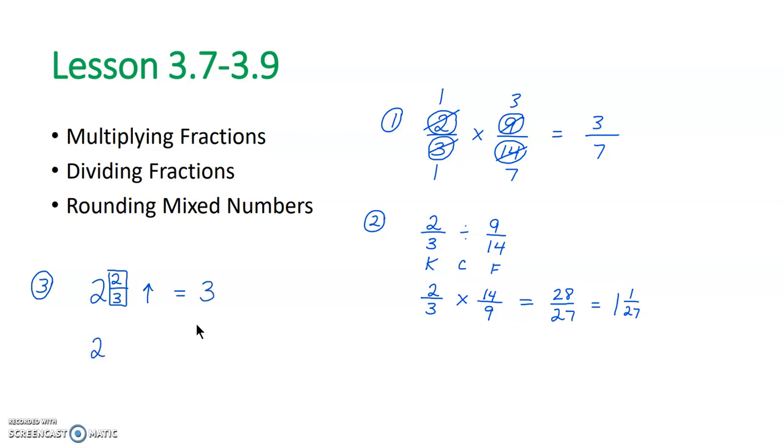If we had 2 and 1/3, again, we would be judging, does it go down to a 2 or up to a 3? It's the fraction that determines this. 1 out of 3 is not at halfway, so this is going to round down. So 2 and 1/3 rounds down to 2. It's closer to 2 than it is to 3.